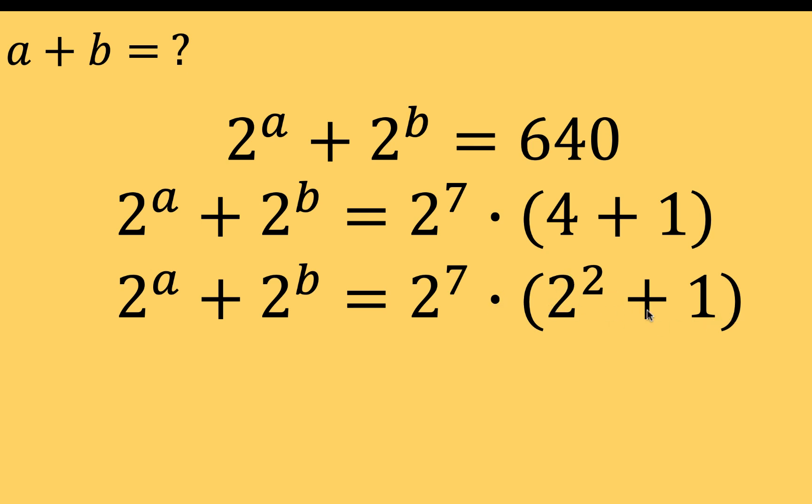You have here a grouping symbol with two terms connected by a plus sign. We can apply the distributive property of multiplication over addition. Let's distribute 2 raised to the seventh to the first and to the second addend. 2 to the seventh times 2 to the second is 2 to the ninth - we add 7 plus 2. 2 to the seventh times 1 is the same number.